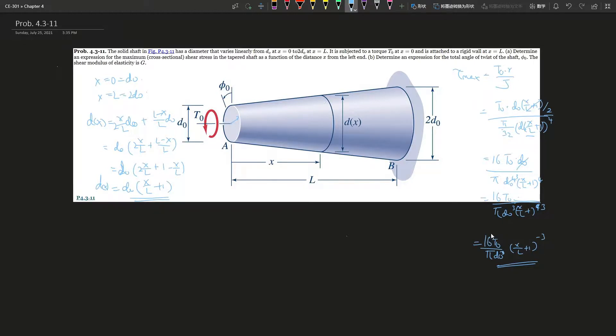And next, we have to determine the expression for the total angle of the twist of the shaft. The shear modulus of elasticity is g. This is also pretty easy because we already know everything in terms of an expression. So this is T times L over, that is wrong, forgot the equation, let me have a look.